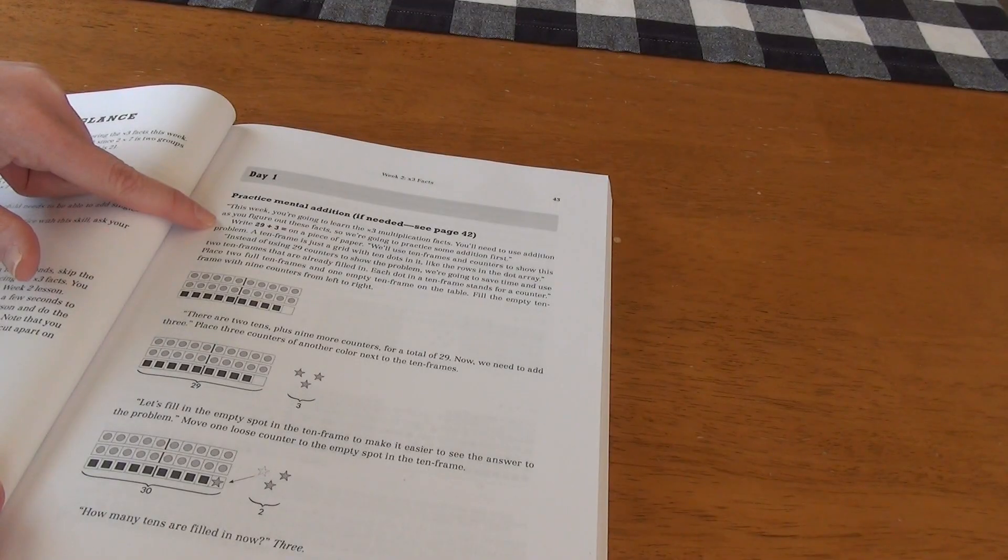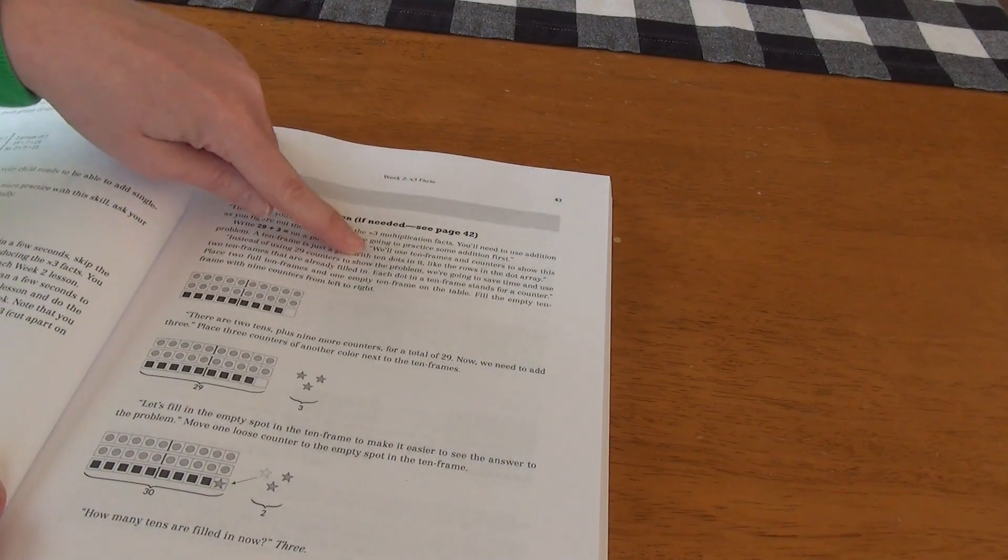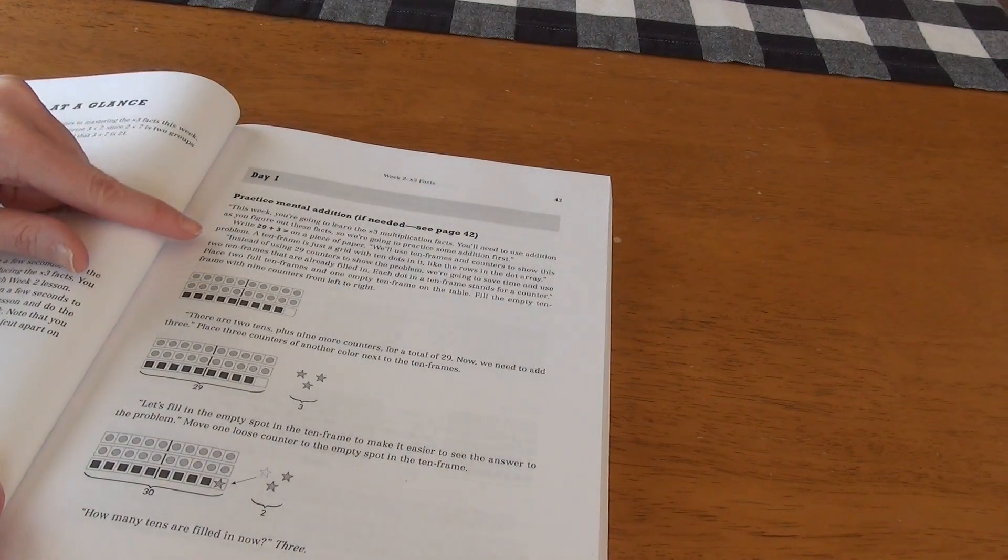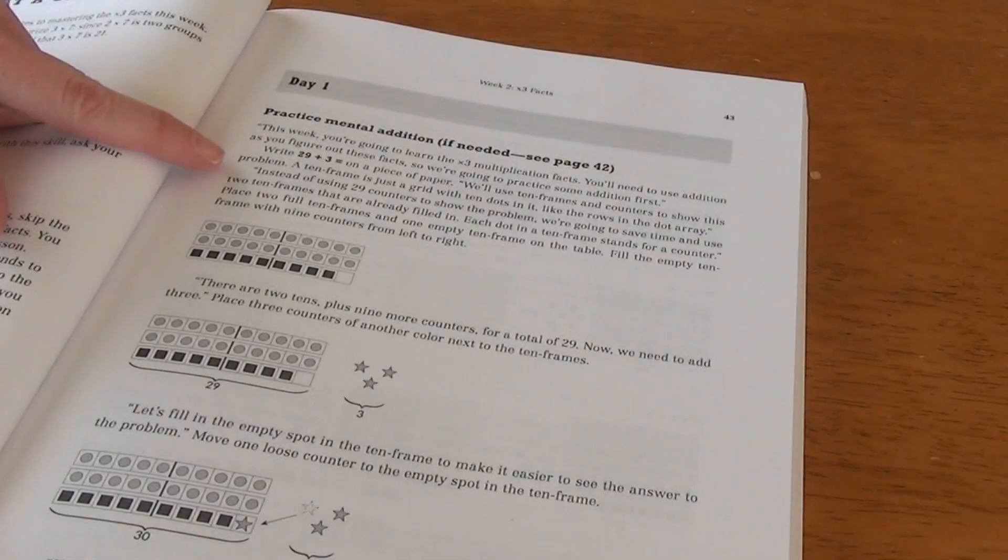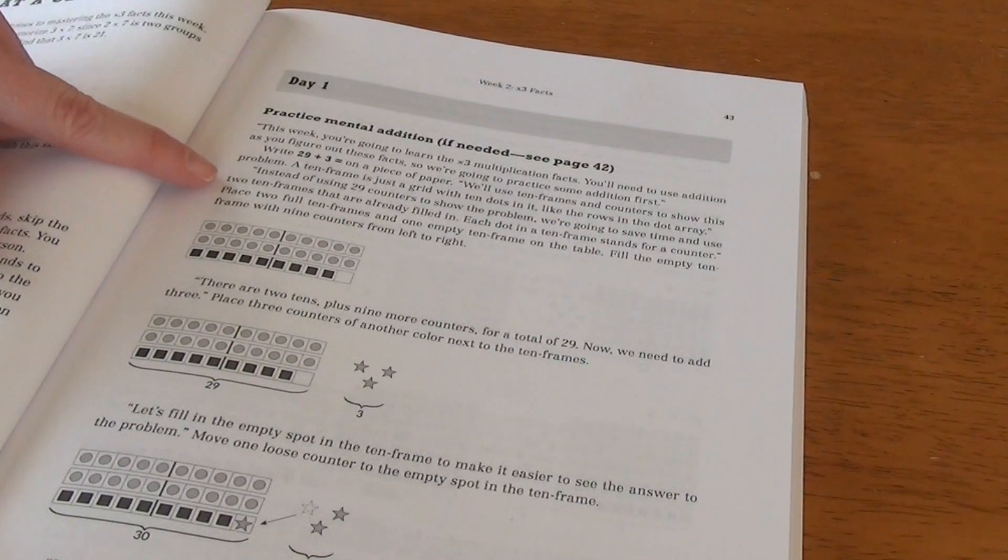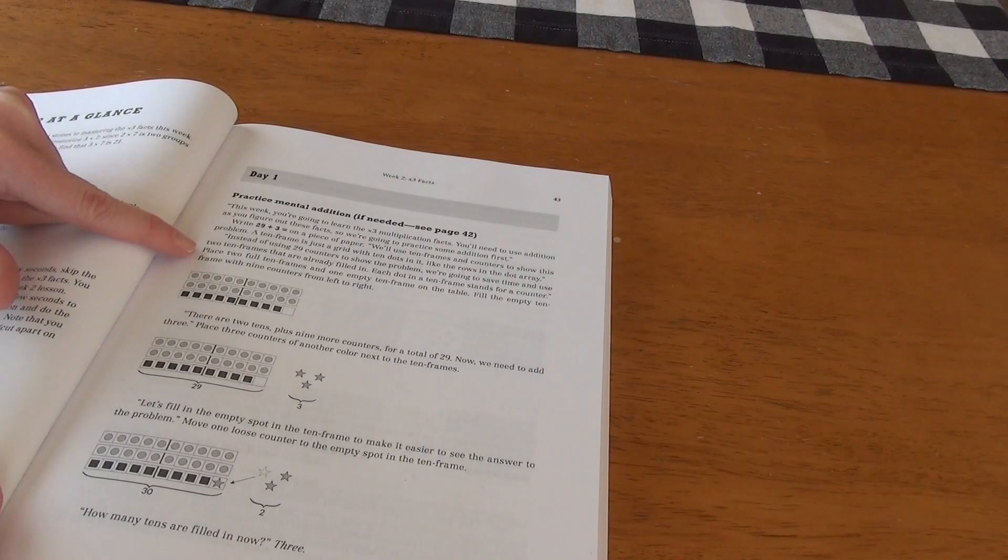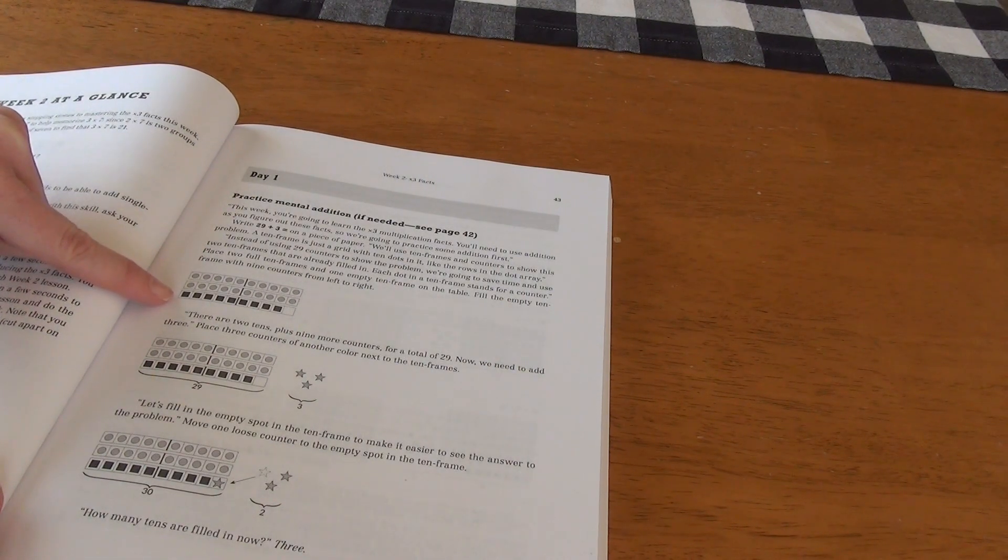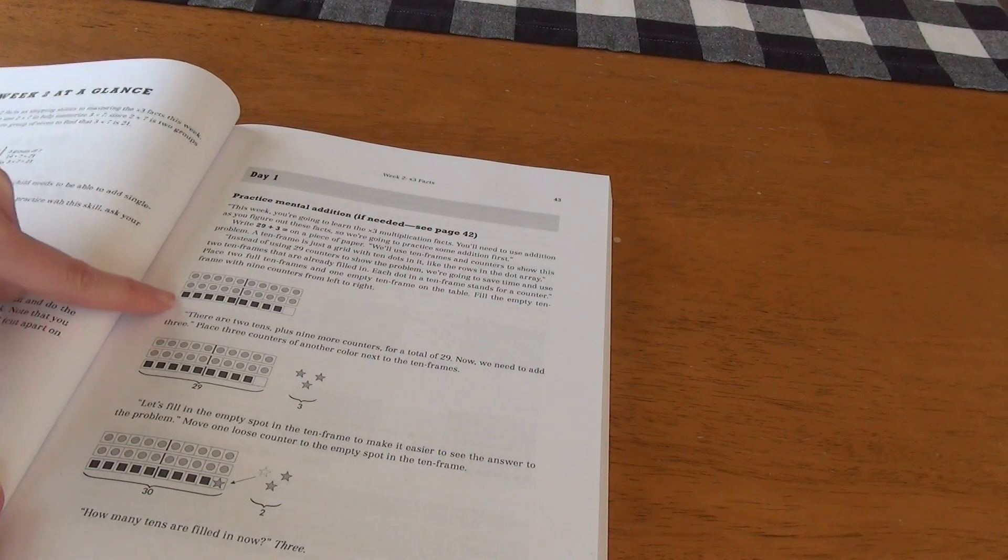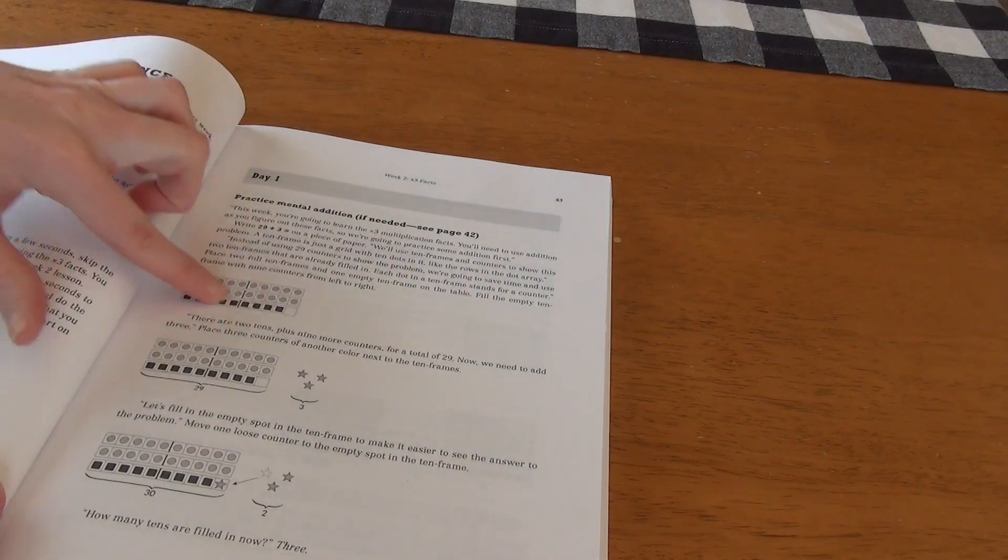Again, scripted. We'll use 10 frames and counters to show this problem. A 10 frame is just a grid with 10 dots on it, like the rows in the dot array. Instead of using 29 counters to show the problem, we're going to save time and use two 10 frames that are already filled in. Each dot in a 10 frame stands for a counter. And then it tells you to place two full 10 frames and one empty 10 frame on the table. Fill the empty 10 frame with nine counters from left to right.